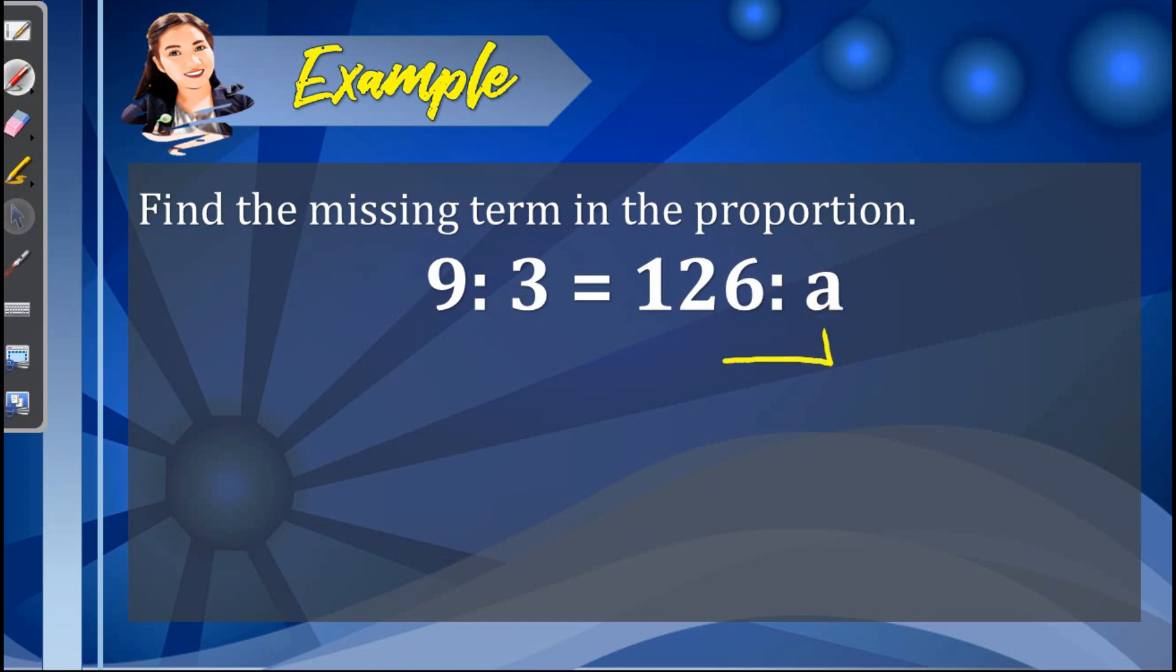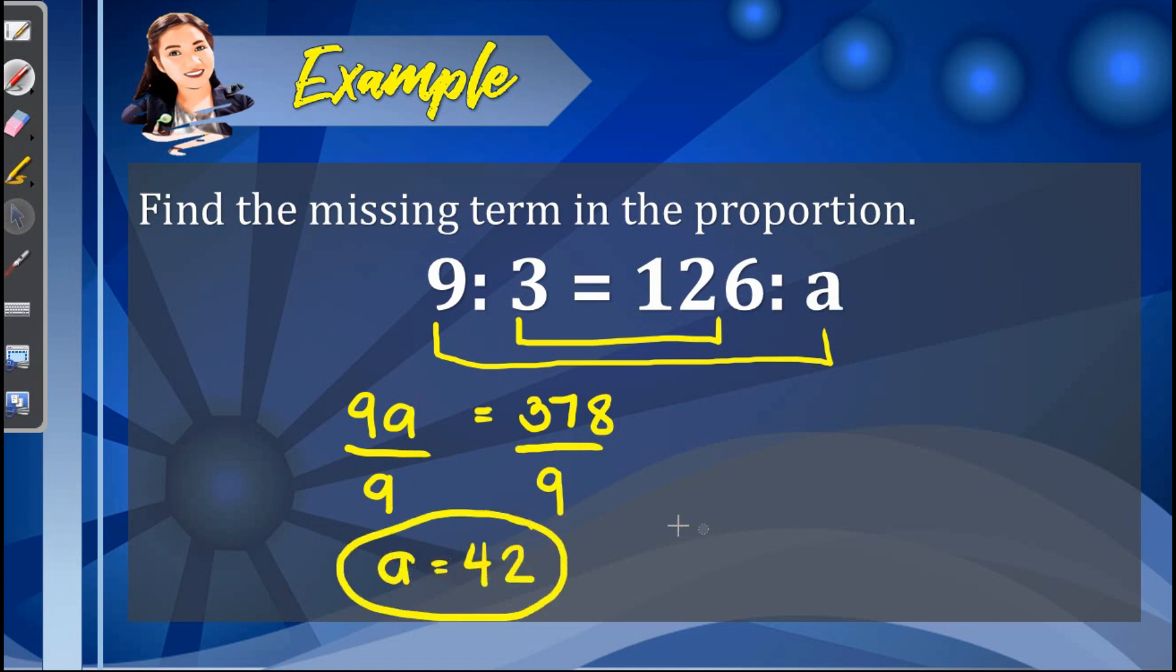So first let us have the extremes, so here we have 9a equals the product of the means, equals 378. And then we divide both sides by 9, so the answer here is a equals 42.